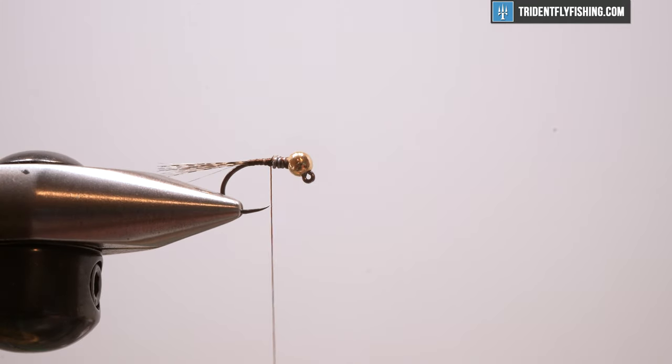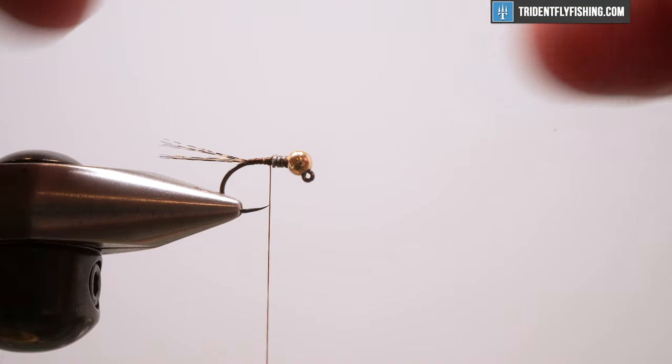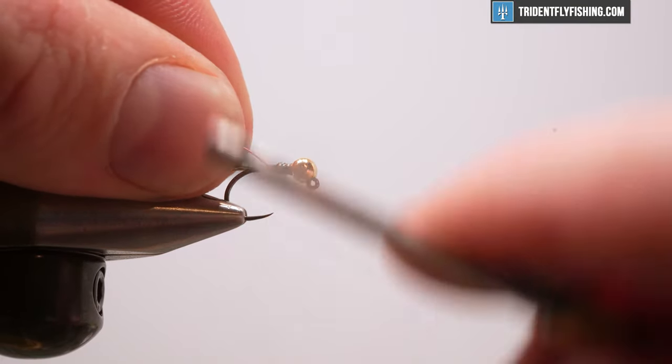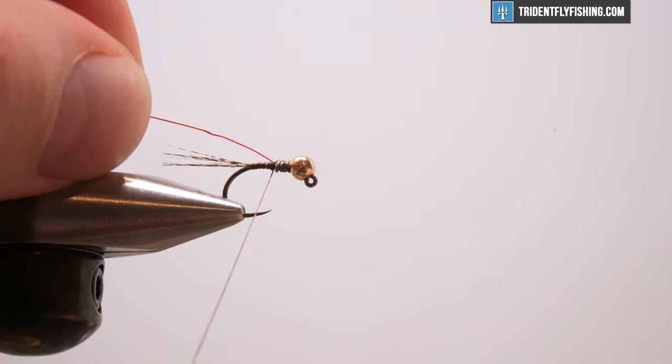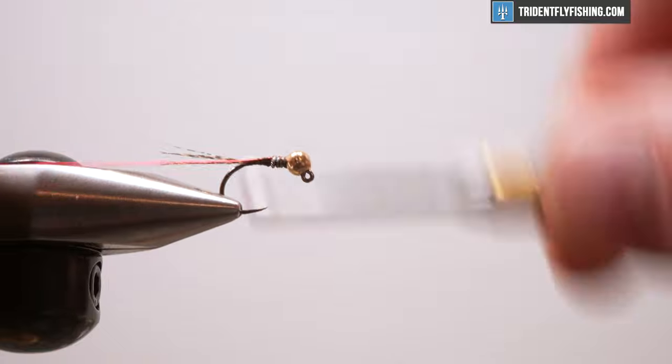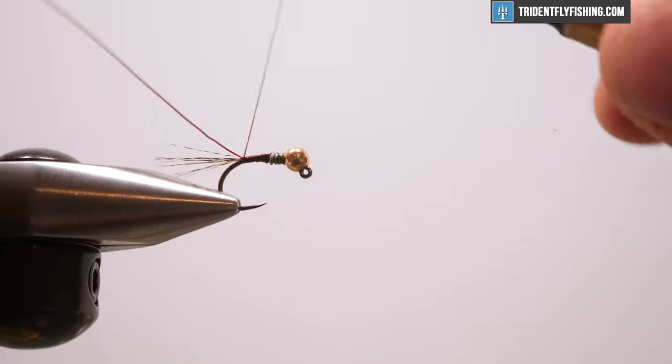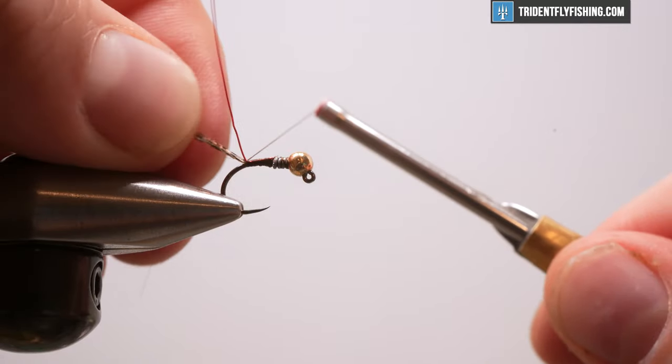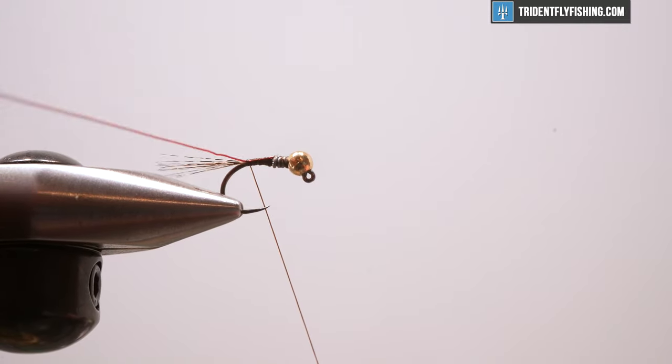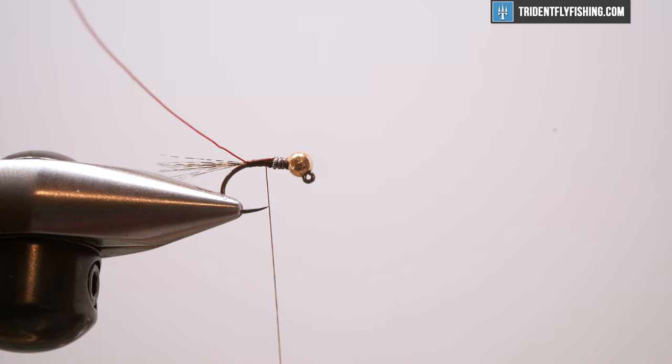The next thing I'm going to tie in is UTC wire in red. For this size hook I have a brassy. I like a nice pronounced rib on my fly, so I'm going to use brassy wire which is the thickest wire that UTC offers. We're going to tie this in right behind our lead, helps with our taper. My side of the hook and bring it all the way back. We might have messed up our tail a little bit but we'll adjust. Let's bring our thread back up, and the next thing we're going to do is tie in our body.